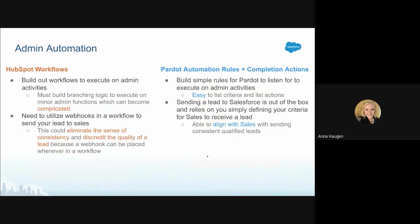Now let's talk about admin automation. In HubSpot workflows, you have to build out workflows to execute on admin activities, so you have to do branching logic to execute on maybe a minor admin function, and that can become complex for just a simple type of action. While in Pardot, you have automation rules where you can build out simple rules for Pardot to listen to and execute on those admin activities — it's easy to list the criteria and the actions, and you have a great overview, which I'll go into a bit more depth on later.